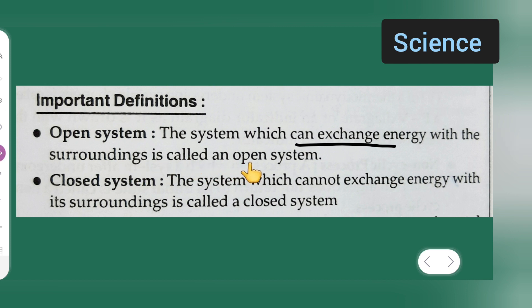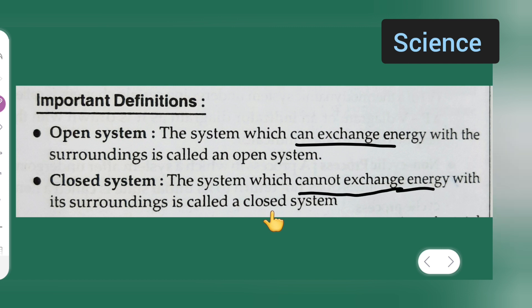Now, what is a closed system? The system which cannot exchange energy with its surrounding is called a closed system. So the system which cannot exchange energy with its surrounding is called a closed system.